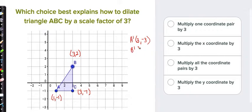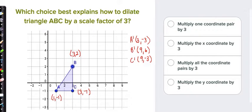B prime would be (9, 6), and C prime would be (9, -3). See if that makes sense. Of course, we would also graph them if asked.